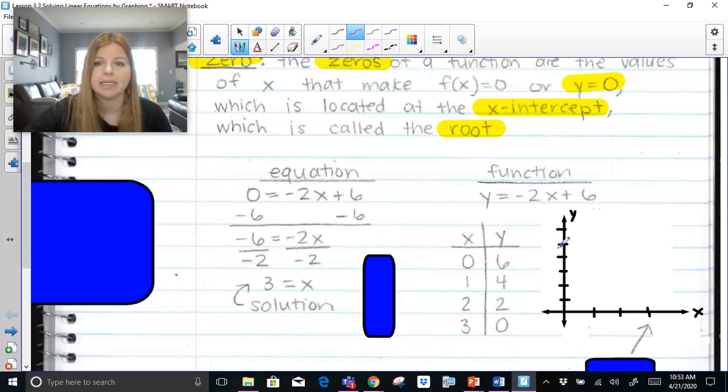And then let's say I went ahead and decided to plot those points. So 0, 6; 1, 4; 2, 2; and then 3, 0. That 2, 2 is a little off. I should fix it, right about there. And I connect my points because I'm making that line.